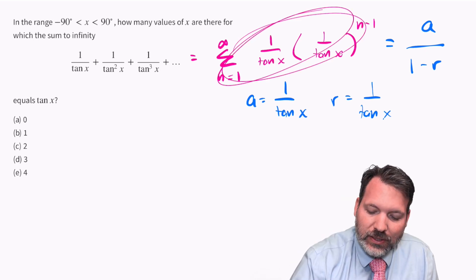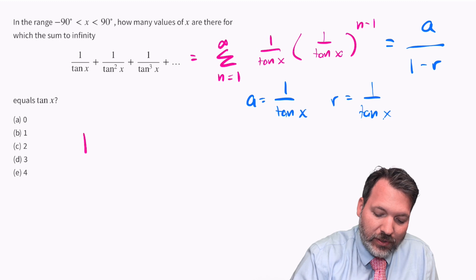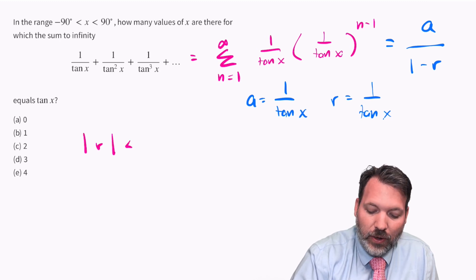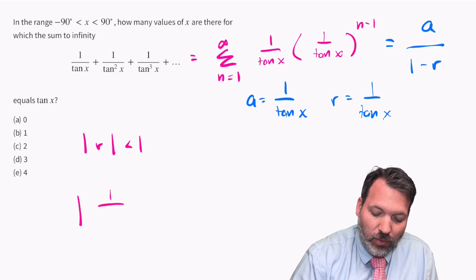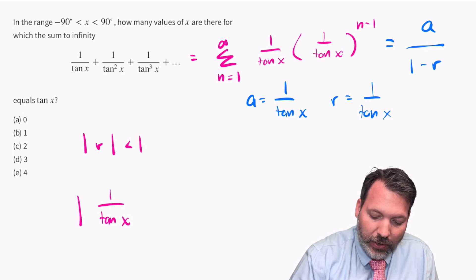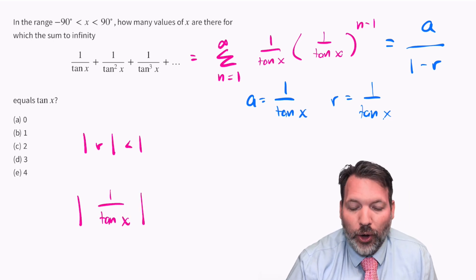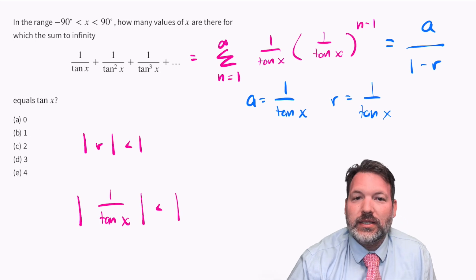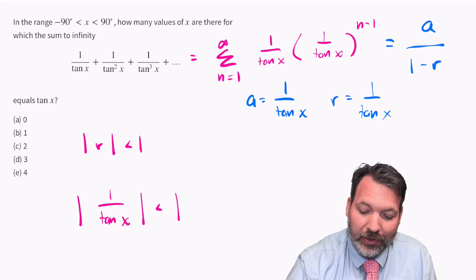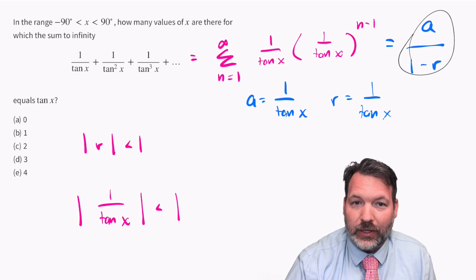We would only expect this series to converge if the absolute value of that ratio is less than one. So in this particular case, we only think this series is going to converge wherever 1 over tangent x is less than one. That doesn't matter for our calculation just yet, but remember it, it might matter in a little bit.